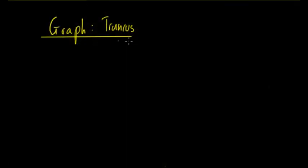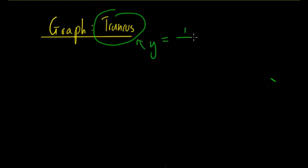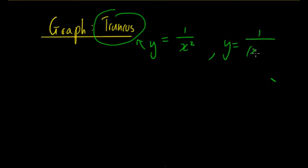In this video we'll be looking at how to graph the Truncus as well as how different transformations affect the graph. The Truncus is a graph with the equation y = 1/x². That's its basic form. Once there are transformations it can change, but it still has the general Truncus shape.